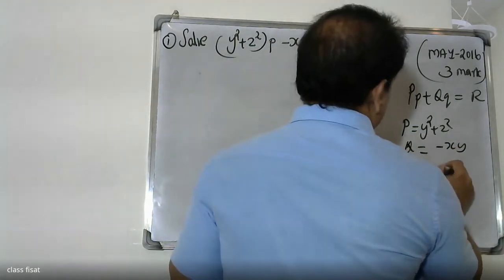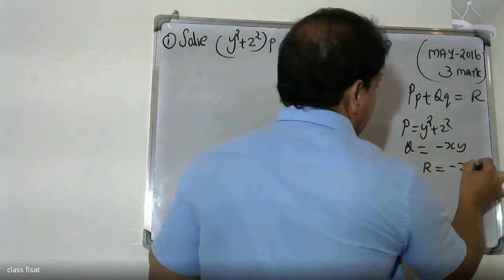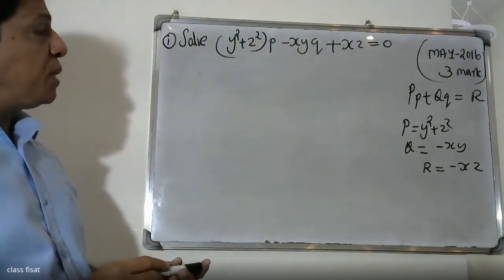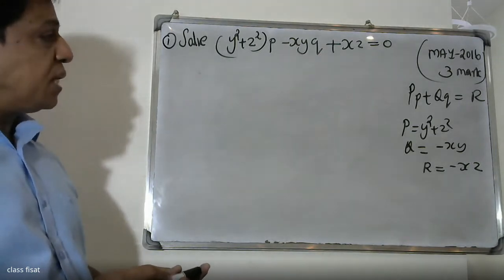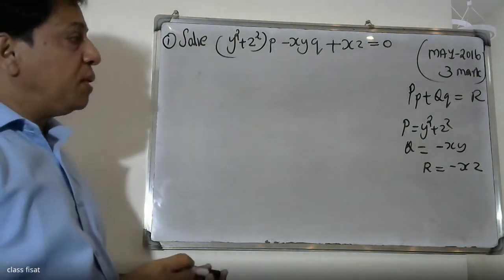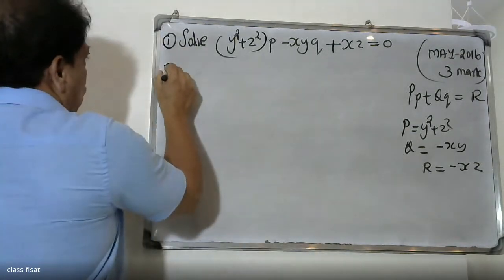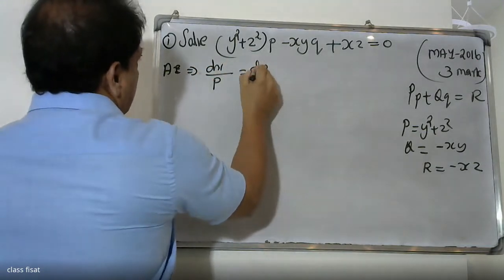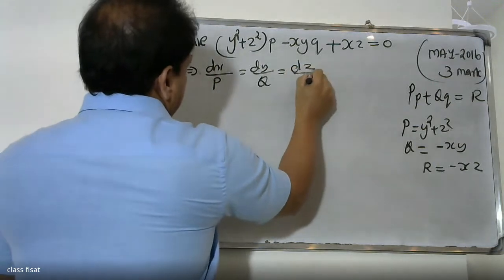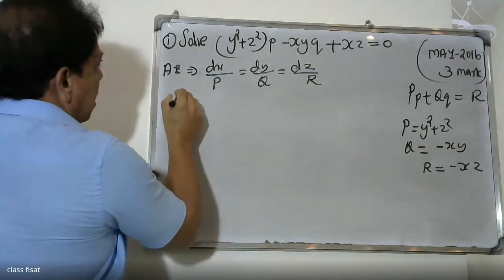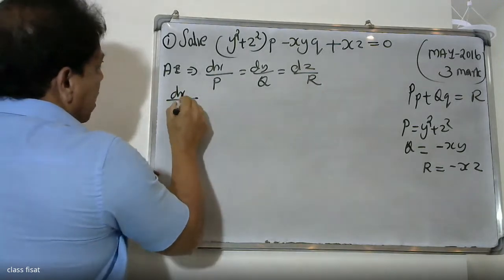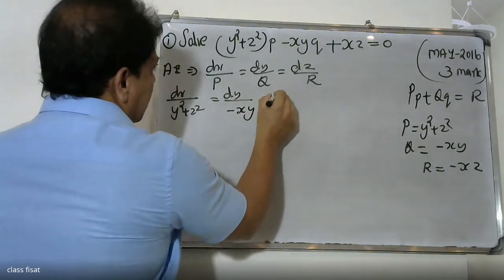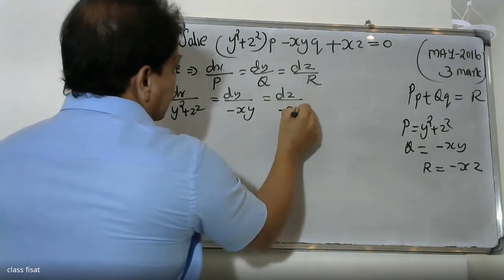So Pp + Qq = R. The value of P is y squared plus xz, Q is equal to minus xy, and R is equal to minus xz. Writing the auxiliary equations: dx by P equals dy by Q equals dz by R, that is dx divided by y squared plus z squared equals dy divided by minus xy equals dz divided by minus xz.